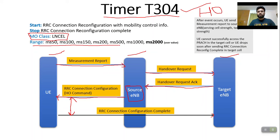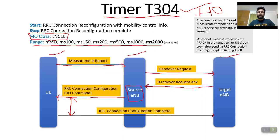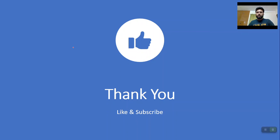Timer T304 belongs to the LN cell MO class. Its range is 50ms, 100ms, 150ms, 200ms, 500ms, 1000ms, and 2000ms. Internal values are 0 through 6. In the dump, you can see four parameters for timer T304 — this is because handover applies to both intra-LTE and IRAT scenarios, so different timer values can be set for each. I am using 2000ms for intra-LTE and 100ms for GSM.